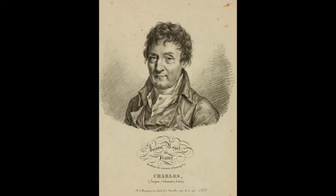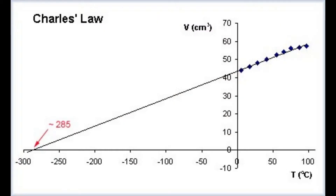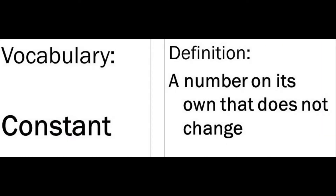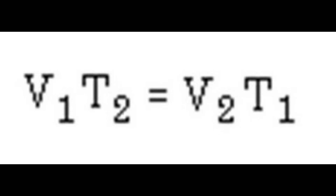Now, next, there is Charles, all about temperature and volume. As volume increases, so will temperature. Only if pressure and moles are constant. It's V1 times T2 equals V2 times T1. That's the formula, the formula, the formula.